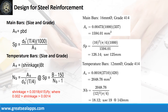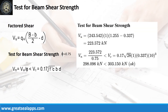The area of steel for temperature bars is 2048.76 mm² and the number of bars for 12 mm bar is 19. The factored shear force is 223.572 kN. The nominal shear force is 298.096 kN, which is less than 303.15 kN concrete capacity, so the shear check passes.